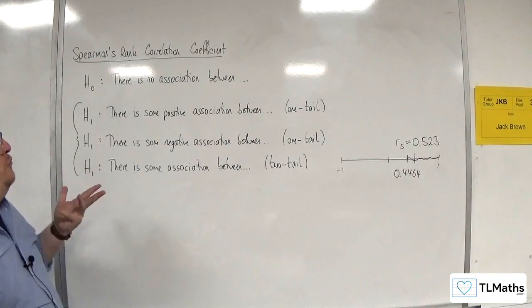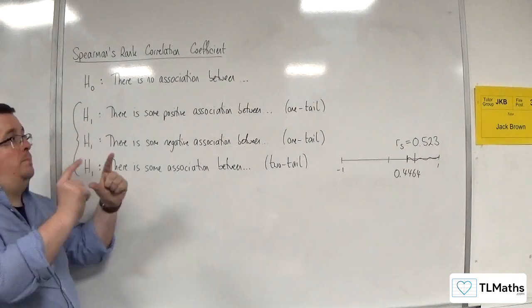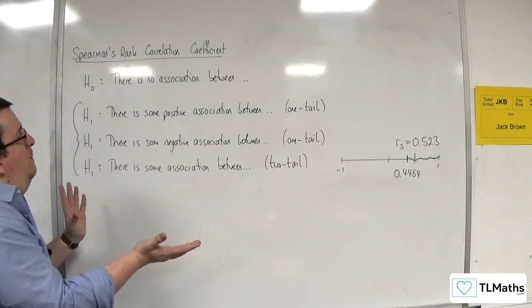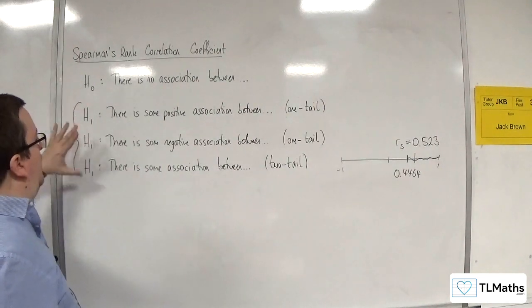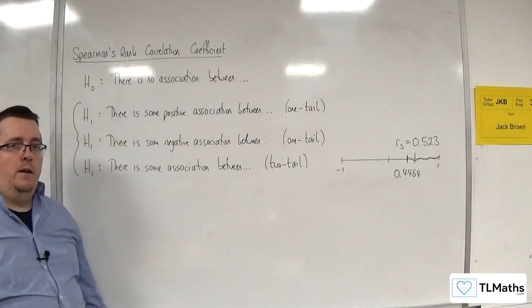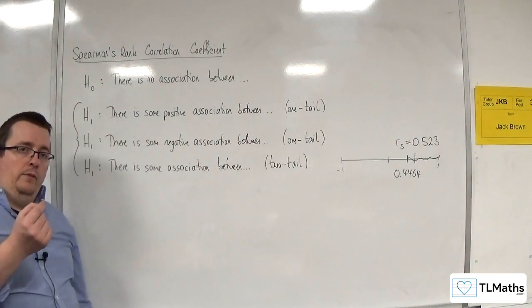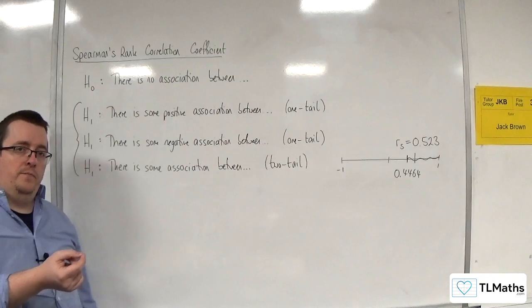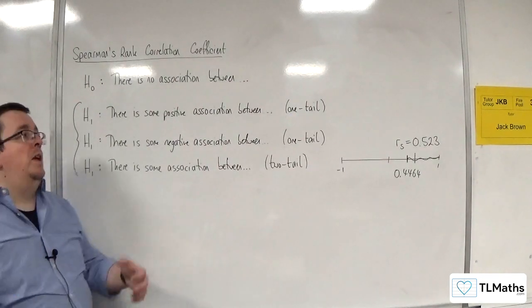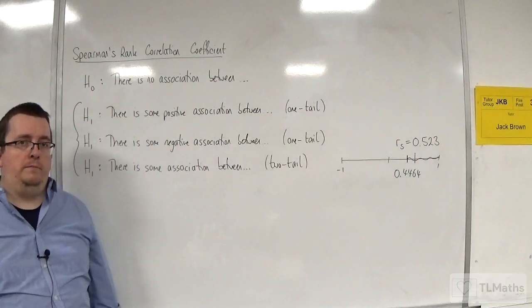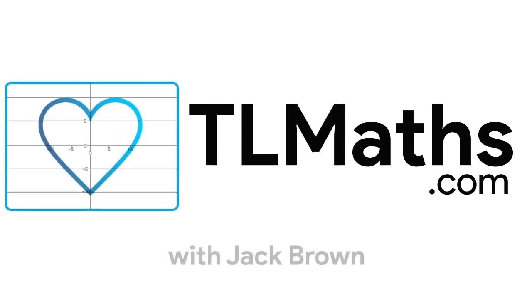The only difference is that it's that first bit, is that we don't have to define rho because there is no rho, and the null and alternative hypotheses must be in statements, in sentences. That's the difference. And we're talking about association here rather than correlation.